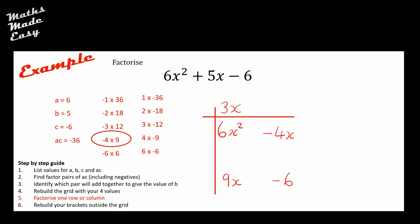Once I've factorized the first column, I switch to asking multiplication questions to fill in the rest of the grid. What times 3x gives 6x²? That's 2x. What times 3x gives positive 9x? That's positive 3. What times 2x gives negative 4x? That's minus 2. Checking: negative 2 × positive 3 = negative 6 ✓. So the top row and left column form my brackets: fully factorized, this is (2x + 3)(3x − 2).